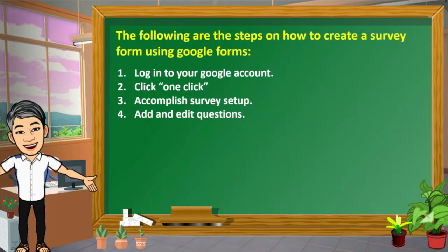The following are steps on how to create a survey form using Google Forms. First, log in to your Google account. Click on the Forms Web App icon. The Forms icon will appear when you add a new tab. Second, click one-click. The OneForms Web App opens a new browser tab that has a blank form.